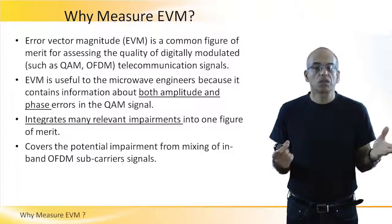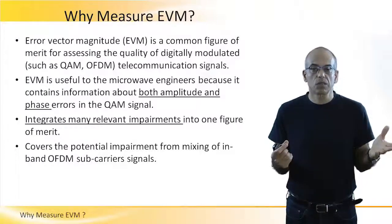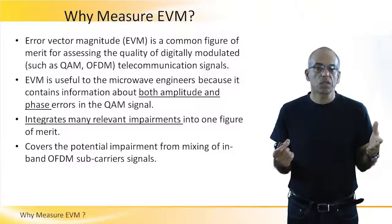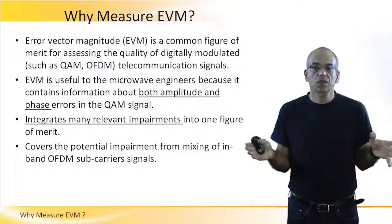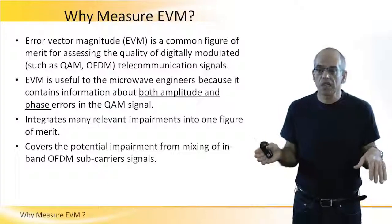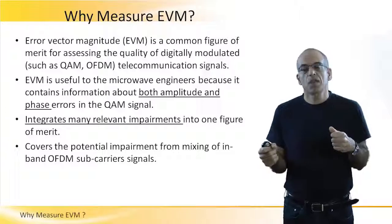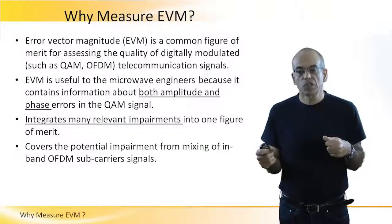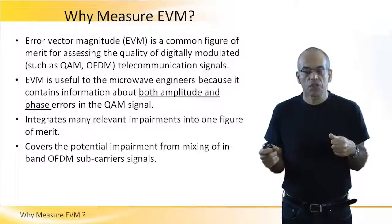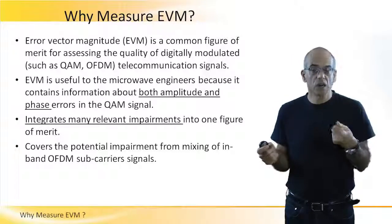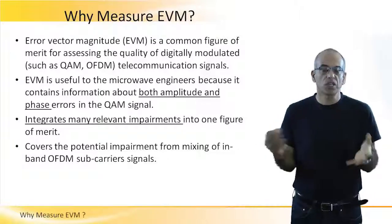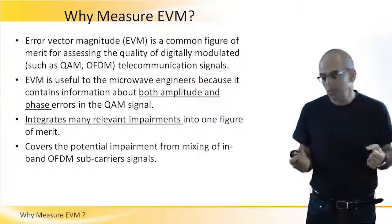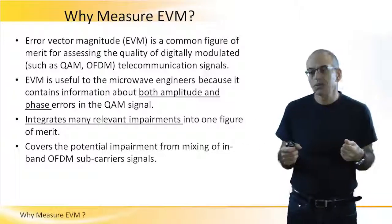A simple way to understand it is just to think about the peak-to-average ratio created by the different sub-carriers. And of course, if we don't have a linear enough system, the different sub-carriers are actually impairing each other.